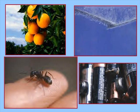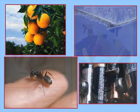Ants contain formic acid — when they sting you, that's the acid they inject. Your batteries contain sulfuric acid, and hydrochloric acid is used to react with many metals to produce hydrogen gas.